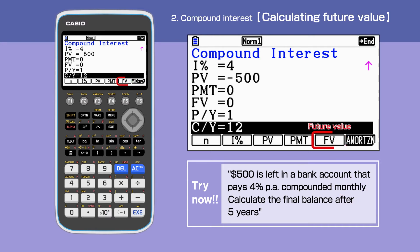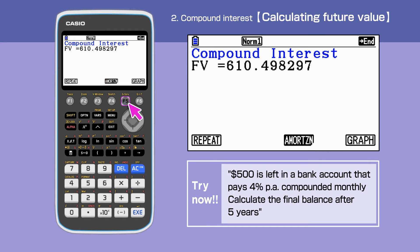We want to find the value of the final balance, so press F5. We have calculated the future value for this question, and it is $610.